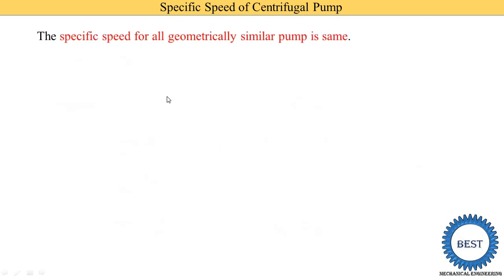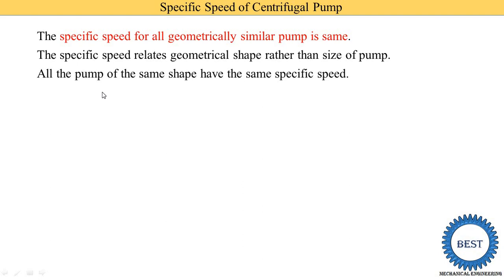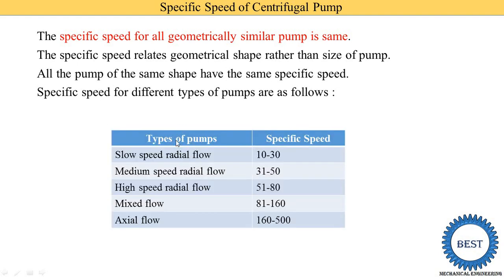The significance of specific speed: the specific speed for all geometrically similar pumps is the same — pumps of the same shape but different sizes share the same specific speed. Specific speed depends only on shape, not size. The specific speed ranges for different pump types are: slow speed radial flow pump: 10–30; medium speed radial flow: 31–50; high speed radial flow: 51–80; mixed flow pump: 81–160; axial flow pump: 160–500.